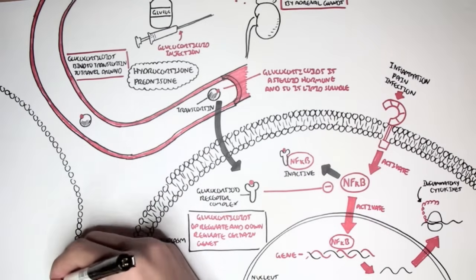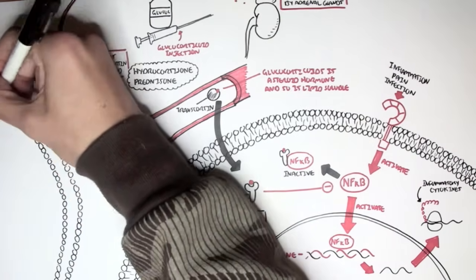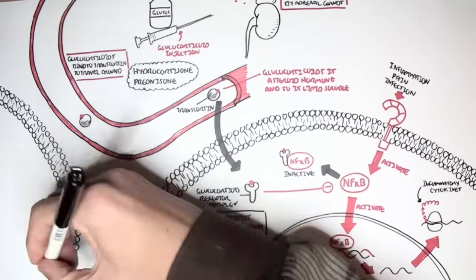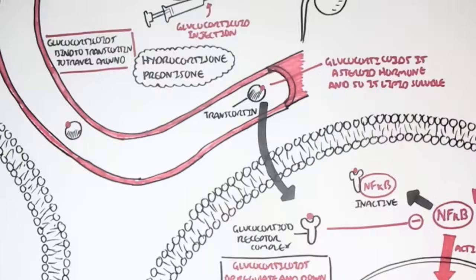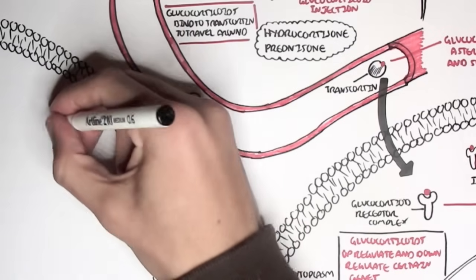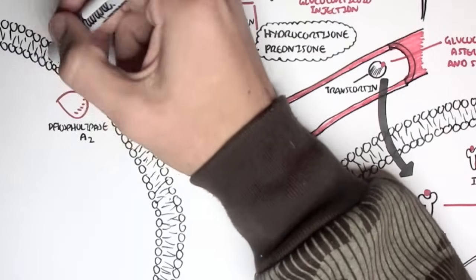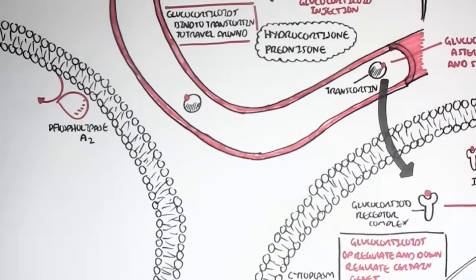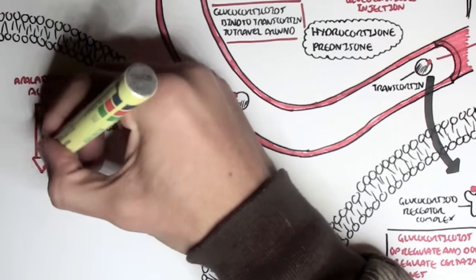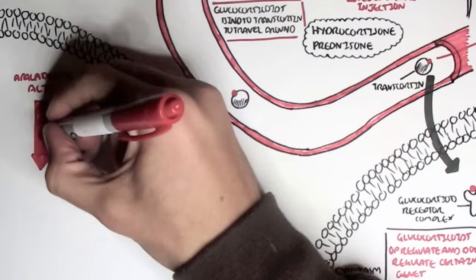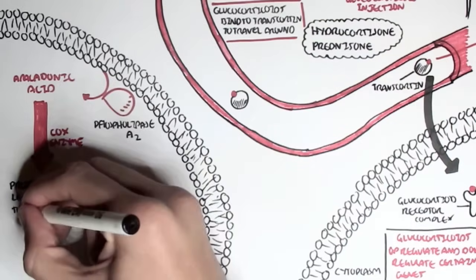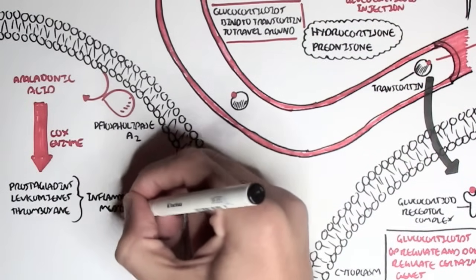Another thing glucocorticoids will do is that it will inhibit the formation of inflammatory mediators carried out by certain enzymes. So an example of this is that when we have inflammatory response, the phospholipid membrane of cells, certain cells such as white blood cells, will be converted to arachidonic acid by a membrane-bound enzyme, phospholipase A2. Arachidonic acid will then be converted by the enzyme COX to prostaglandins, leukotrienes, or thromboxanes, and these are eicosanoids. All of them are inflammatory mediators.